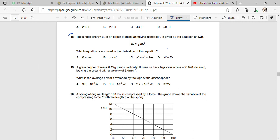In this question number 18, they are saying the kinetic energy of an object mass at speed v is given by the equation shown. This is the equation that is shown. Which equation is not used in the derivation of this equation? Out of these equations, which equation is not used to derive this equation?